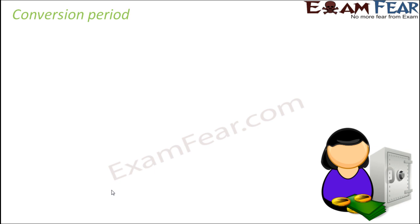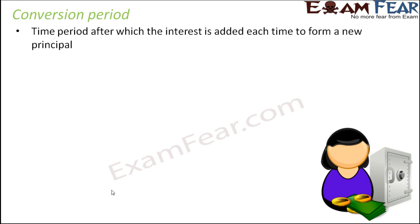In the previous example I considered, the money was compounded annually. That means the rate of interest is, let's say, 10% or 5% per annum, so every year that rate of interest is applicable. But sometimes the time period is different. The time period after which the interest is added each time to form a new principal is called conversion period.